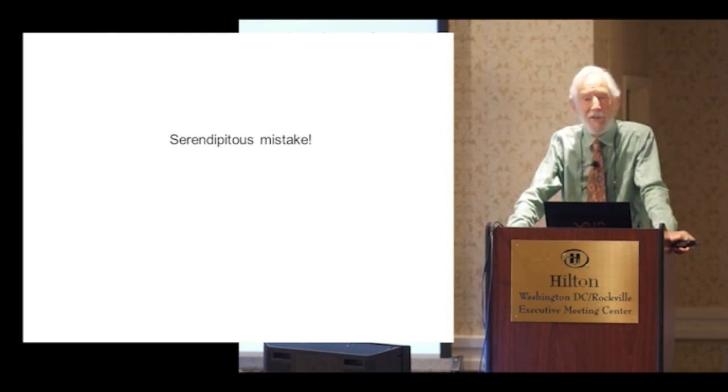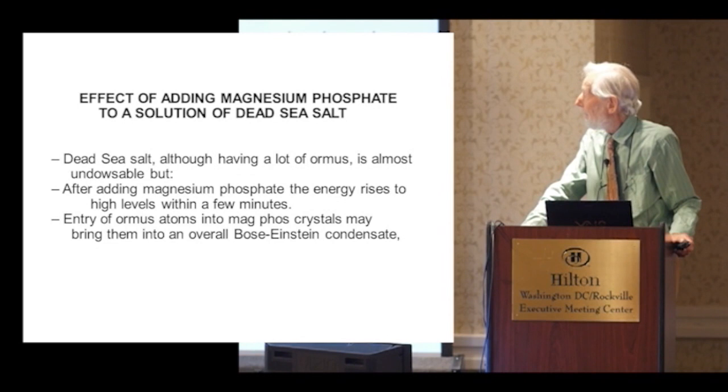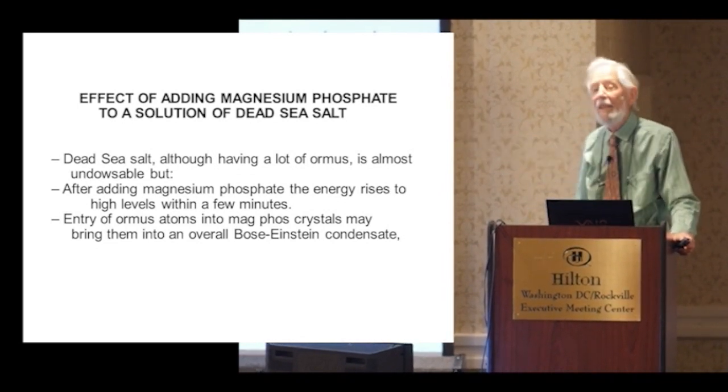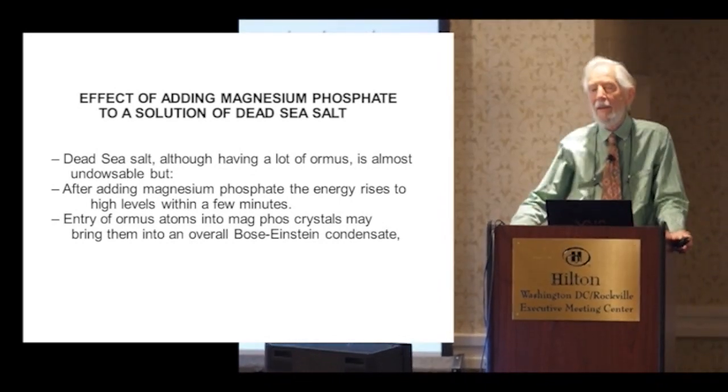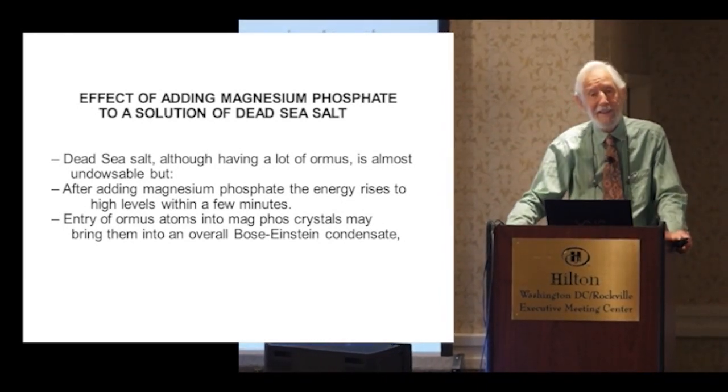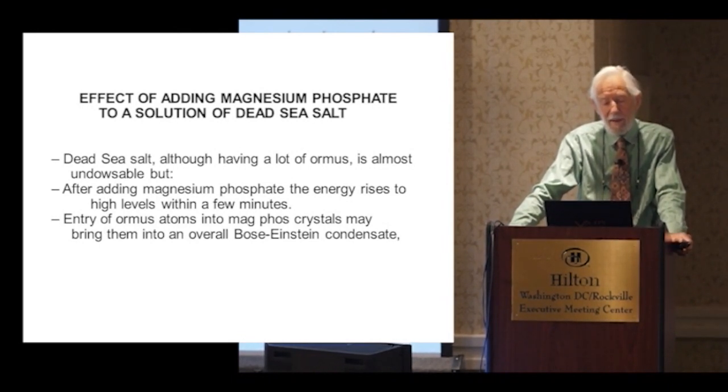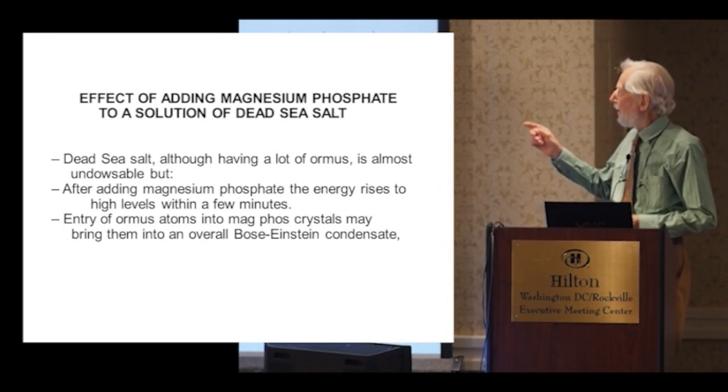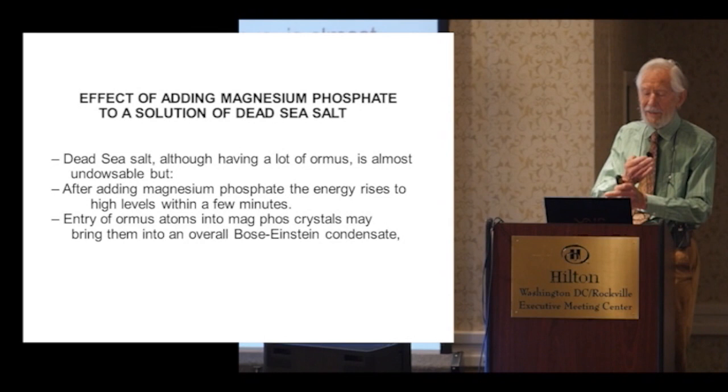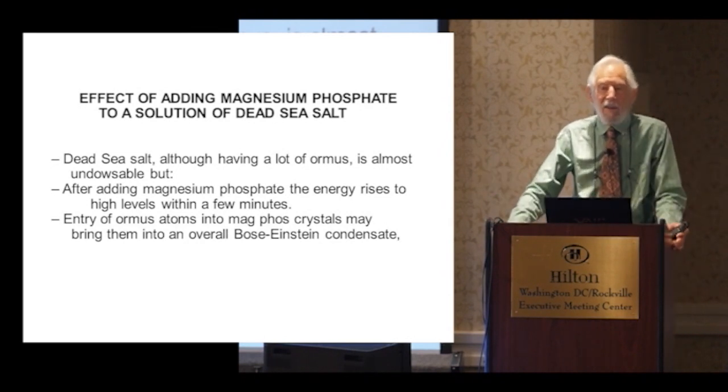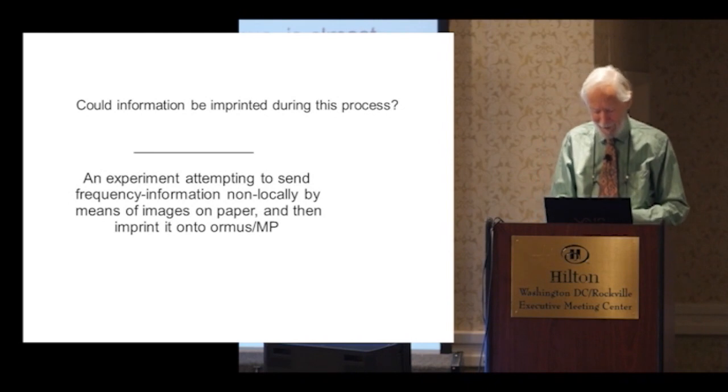I then bought some magnesium phosphate and added it to a solution of dead sea salt. Right enough, in a few minutes the dowsable energy went up enormously. And why should this be, when dead sea salt, even the crystalline dead sea salt, has almost no dowsable energy? I can only think of this as somehow, on going into the magnesium phosphate crystals, the ORMUS atoms align themselves into Bose-Einstein condensate. I couldn't go into the physics for that—I'm not a physicist—but it's something like that.